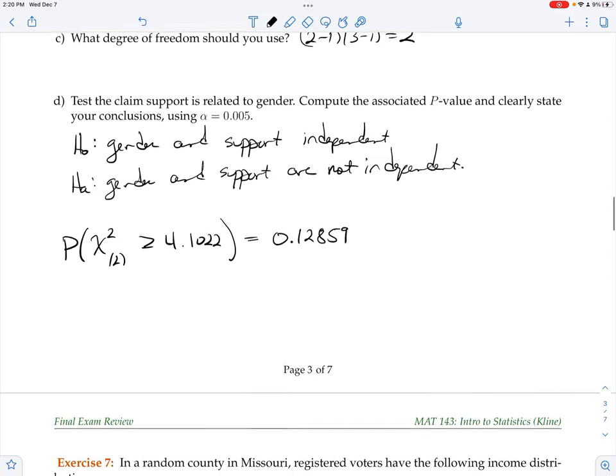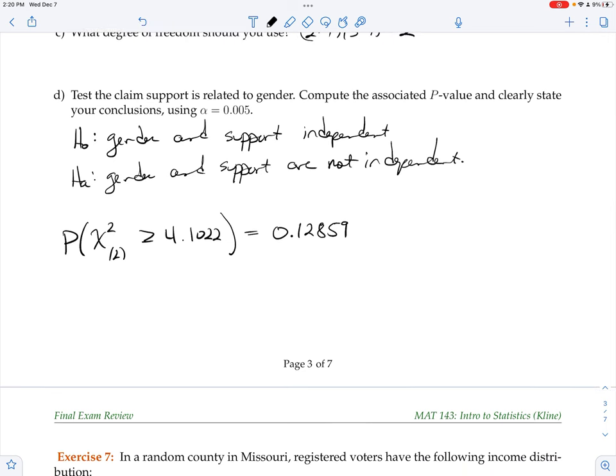That's almost 13 percent. That's too large of a p-value to reject the null hypothesis, so here we would fail to reject the null hypothesis.